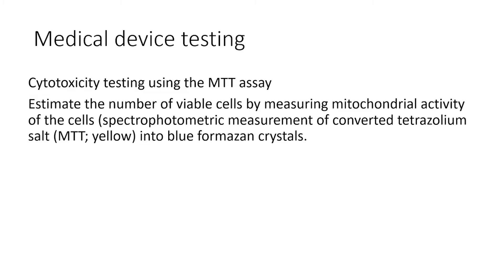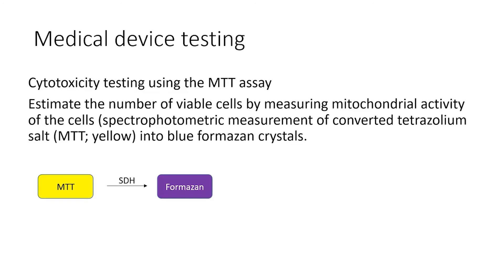This assay uses the activity of a mitochondrial enzyme as a measure for viability. Cells are grown on cell culture plates and exposed to components or extracts from the materials to be tested. After exposure, MTT is added to the cell culture. Only the living cells are able to convert the yellow MTT to the purple-colored formazan.